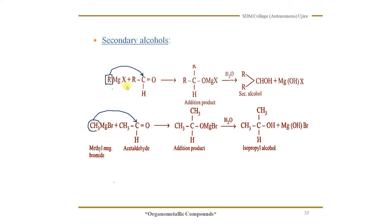As an example, methyl magnesium bromide is treated with acetaldehyde. In a similar manner, the reaction takes place: MgBr goes to oxygen, forming an addition product. Further, hydrolysis takes place — addition of water gives CH3-CH(OH)-CH3, which is isopropyl alcohol. The IUPAC name for this compound is 2-propanol. It is an example of a secondary alcohol.